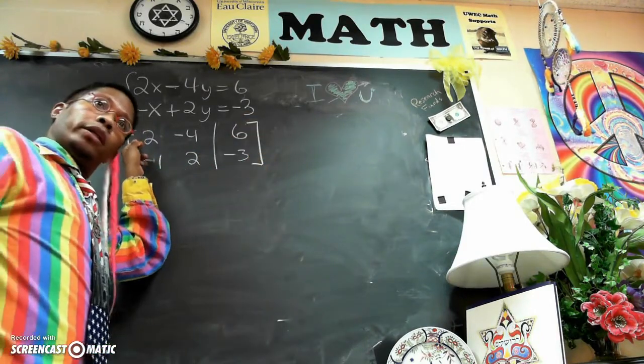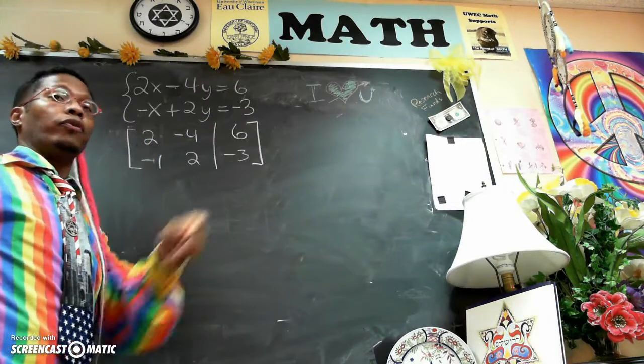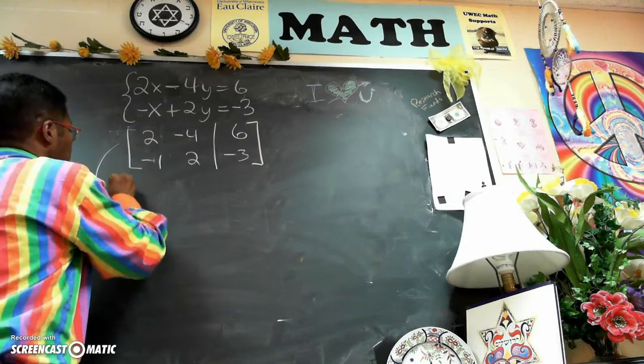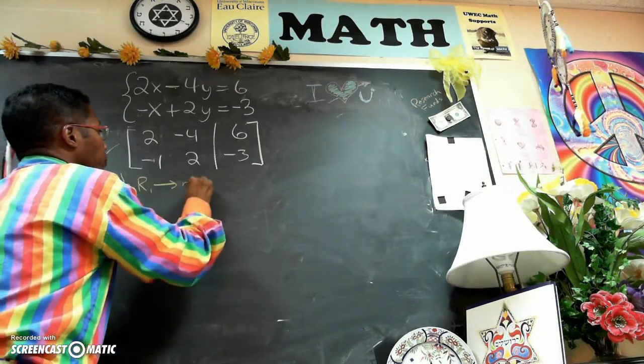Now we want to get a 1 in the top left. To get a 1 here, I have to multiply the whole first row by 1 half. So we're doing 1 half times row 1 to get a new row 1.